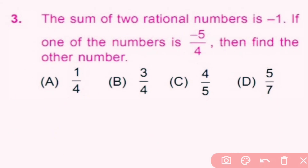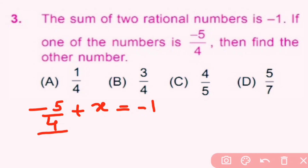Question 3: The sum of two rational numbers is −1. If one of the numbers is −5/4, find the other number. One number is −5/4, let the other number be x. Their sum is −1, so x = −1 + 5/4, moving −5/4 to the other side.